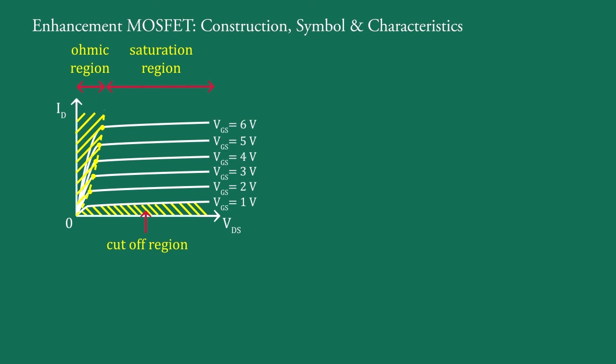It is to be noted that no channel current can flow if the gate is at zero or negative potential. Hence, the gate voltage is effective only in one direction.